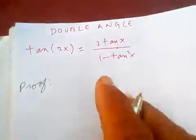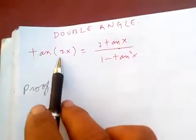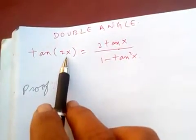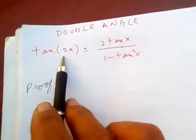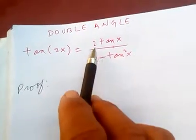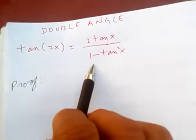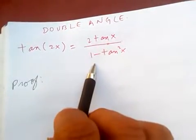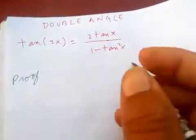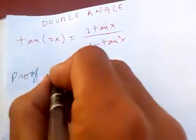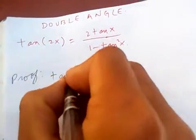Hey friends, I'm going to prove the double angle formula for tangent. The double angle formula for tangent states that tan(2x) = 2tan(x) / (1 - tan²(x)). So let's prove it.